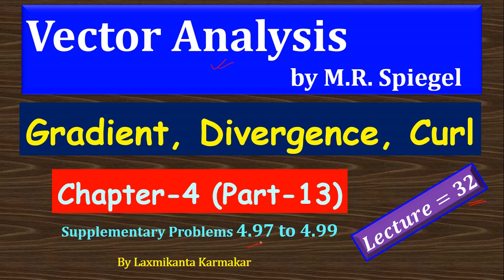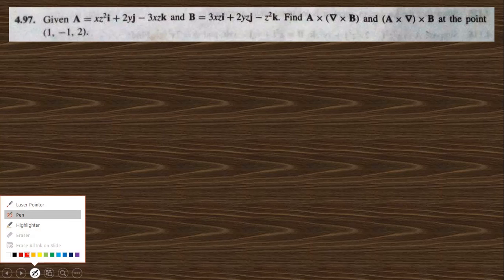In this video, we want to solve supplementary problems 4.97 to 4.99 of chapter 4, which consists of gradient, divergence, and curl. Going to problem 4.97, a vector A is given and we need to find the curl of the vector.